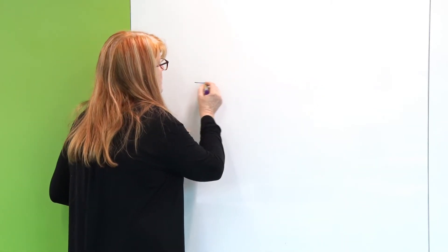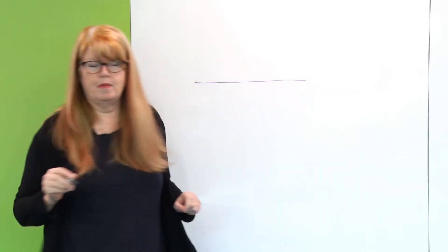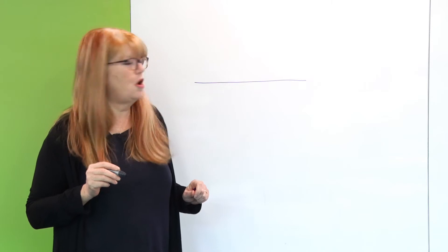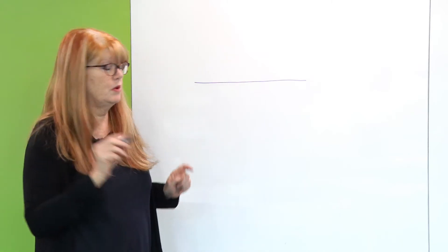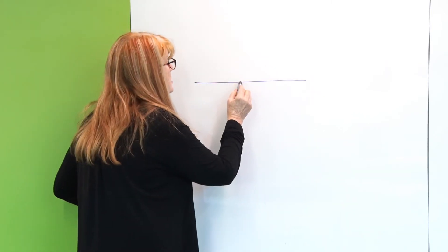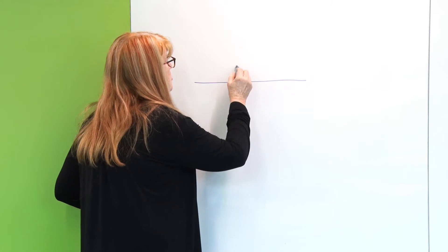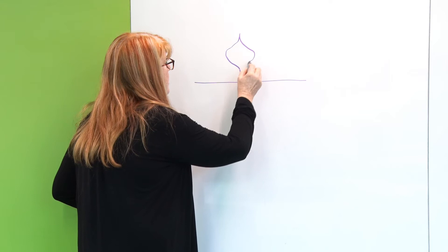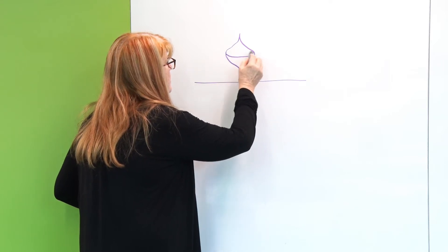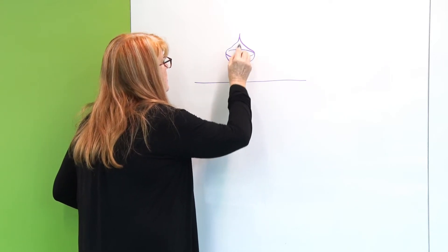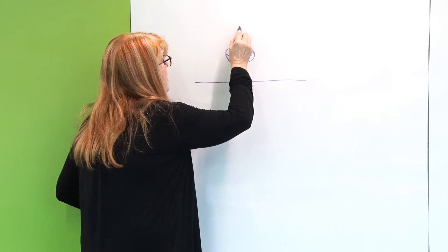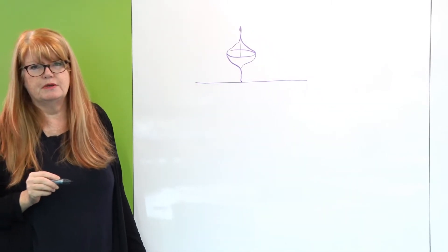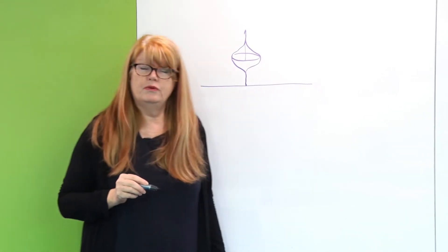So if I, let's say here's a table top and I take my little top and I'm not spinning it. If I try and stand it up, let me try and draw a top. You often draw something like that. Okay? And if I just stand it on the table, what happens to it? Well, it usually falls over.